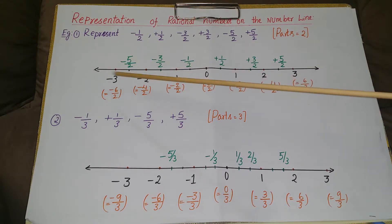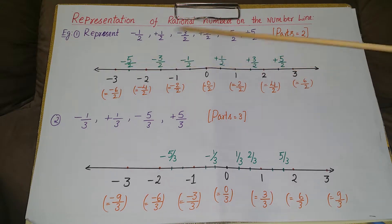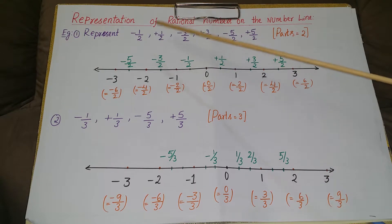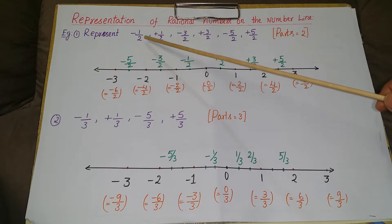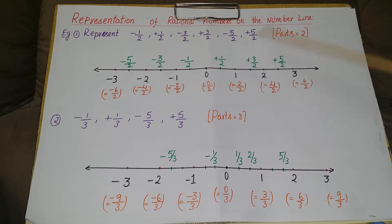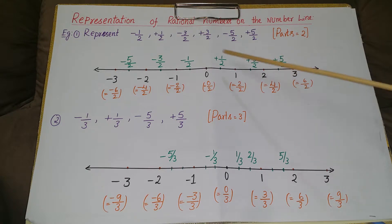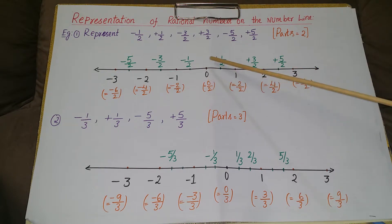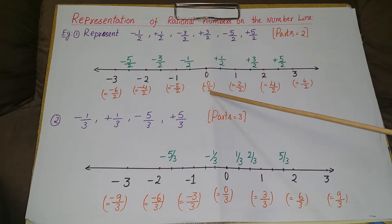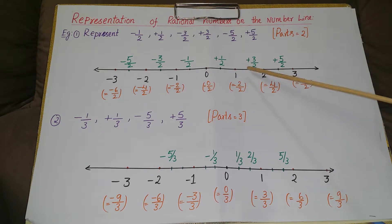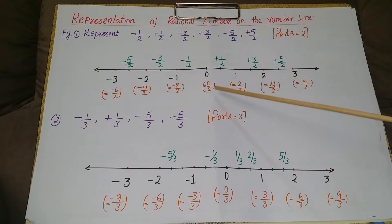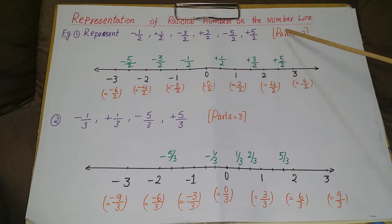The denominator here is 2, so the number of parts is 2. Just divide each segment — 0 to 1, 1 to 2, and 2 to 3 — into 2 parts. Then show 0 as 0/2, 1 as 2/2, and 2 as 4/2, because the number of parts is equal to 2, so we are showing it like this.